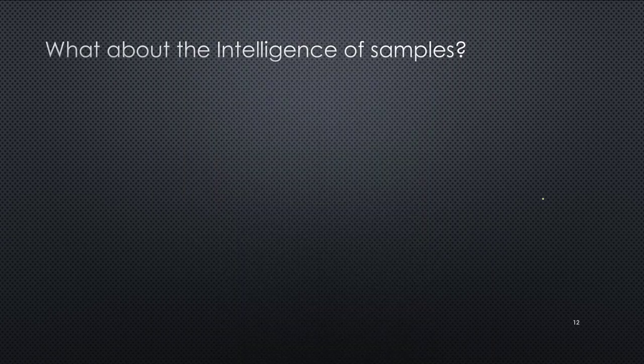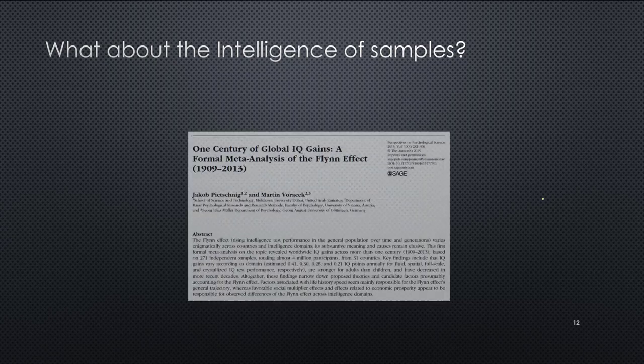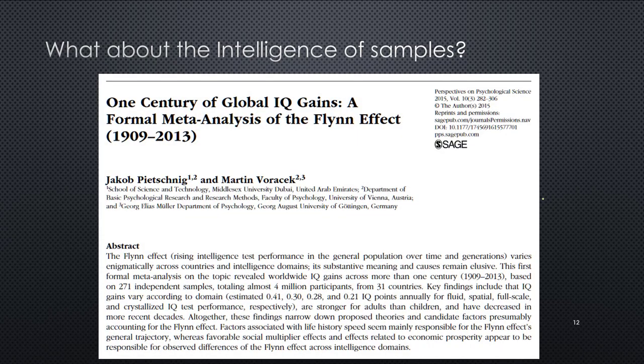You could do meta-analysis of the means and do things like the intelligence of samples. In fact, this has been done. So they've got over a century of data on the so-called Flynn effect, named for James Flynn, who's an Australian psychologist, I think, or maybe sociologist, who's shown that generation by generation IQ scores continue to go up.